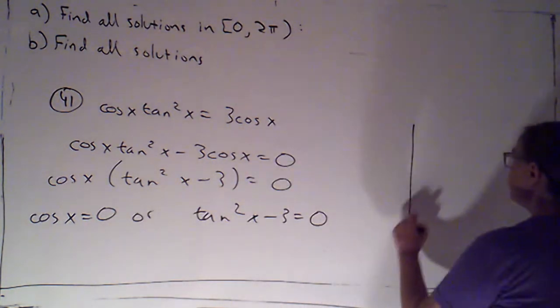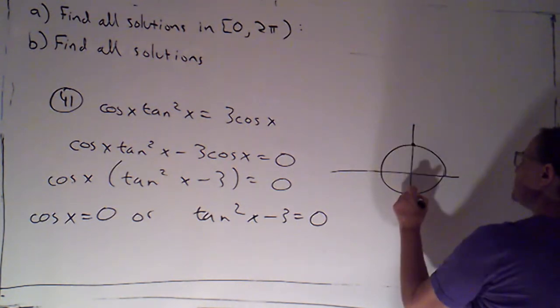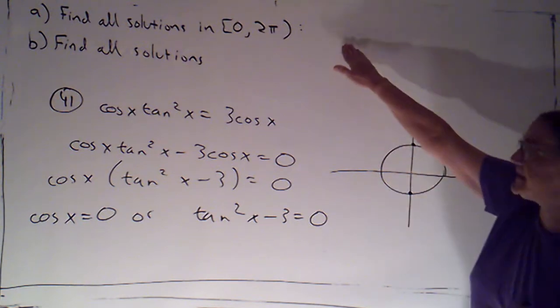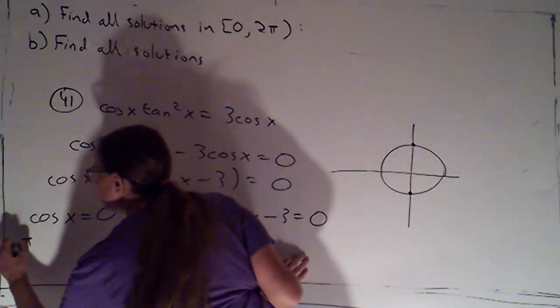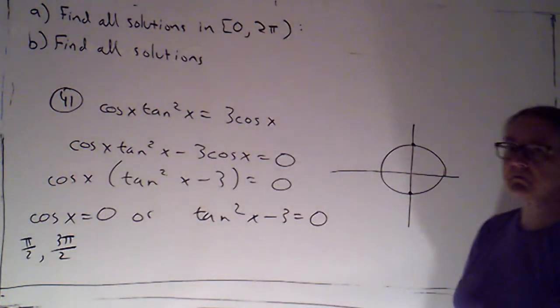Now cosine of x is zero, of course that's a quadrantal angle. So if I look at my unit circle, that's going to be angles whose terminal rays intersect the unit circle at one of these points on the y axis. And of course in the interval from zero to 2 pi, there are two such angles, pi over 2 and 3 pi over 2.